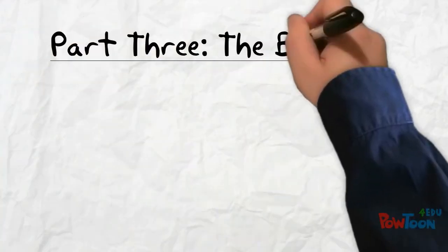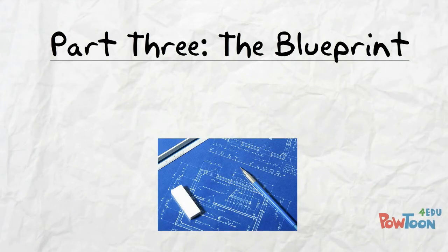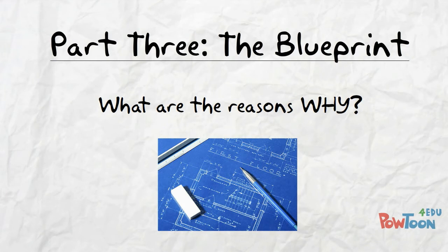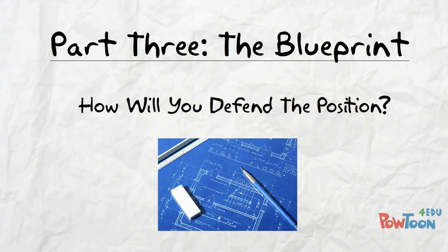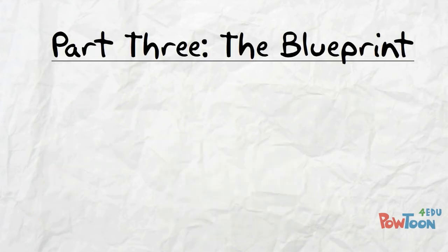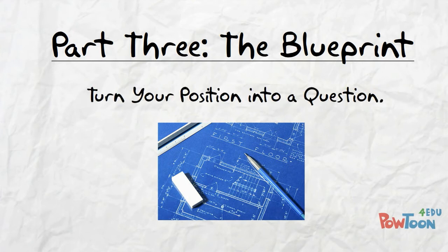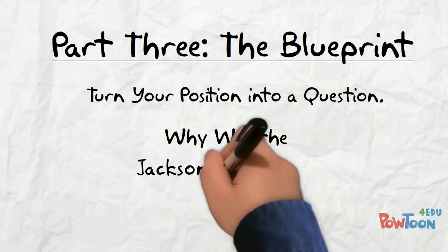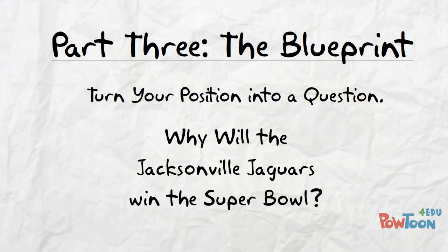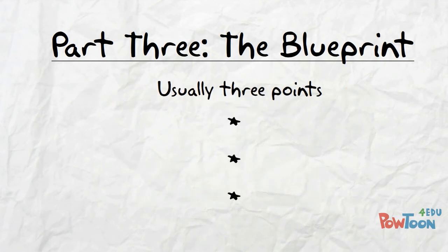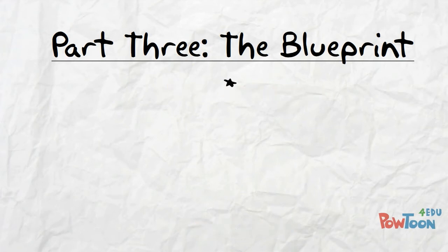But you're not done yet. There's one final part: the blueprint. Readers like to know the reasons why for your position. How exactly will you defend the position of the Jaguars winning the Super Bowl? What are the reasons? That's where the blueprint comes into play — no pun intended. The key is to turn your position into a question: Why will the Jacksonville Jaguars win the Super Bowl? Generally this blueprint takes the form of three strong points, but not always — some blueprints can be just one point, two points, or many points. So what are the strongest reasons?